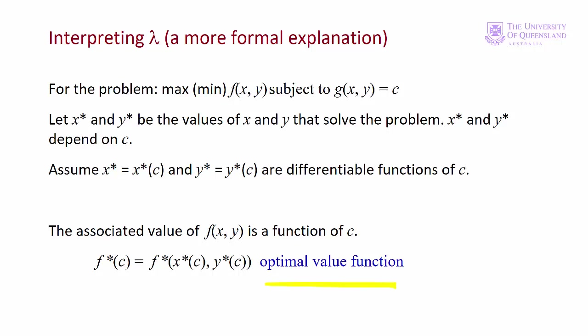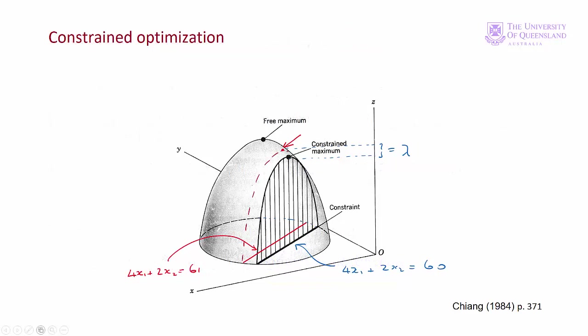Let's look at that on the diagram. Here we get an increase in the constraint by one unit — we can imagine the constraint moving outwards from the origin. For each value of c we'll have a different optimal solution. The green line here represents f*(c), the optimal value of the function as c changes — that's the optimal value function.